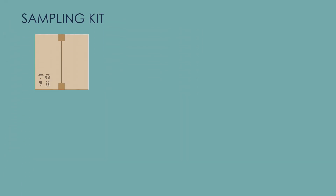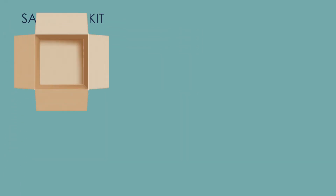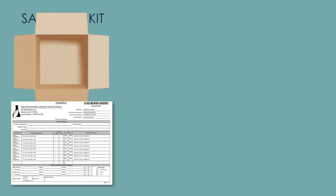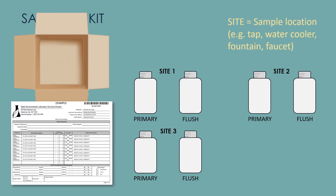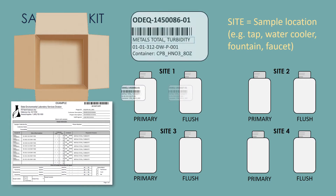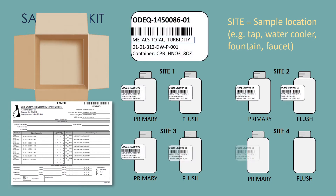Once you receive the sampling kit from DEQ, ensure all supplies were included: a chain of custody, two bottles per sample location, and one unique sample label per bottle.